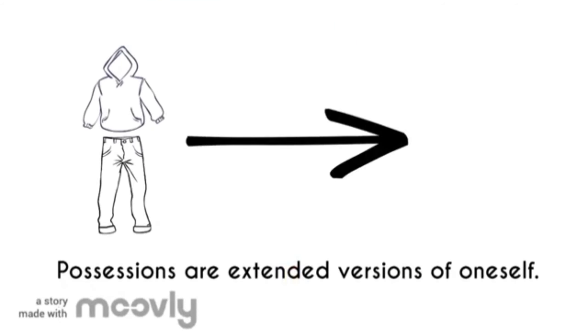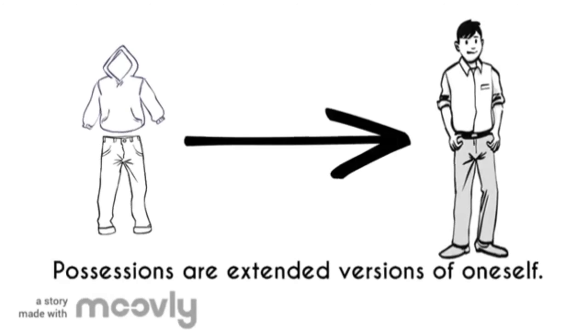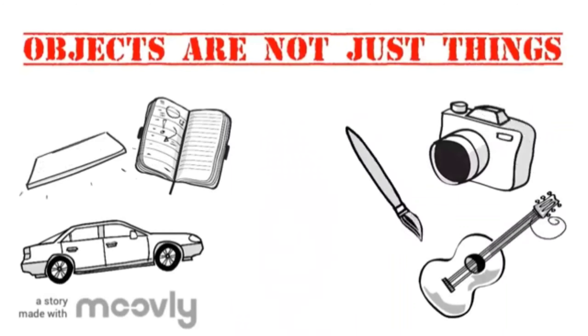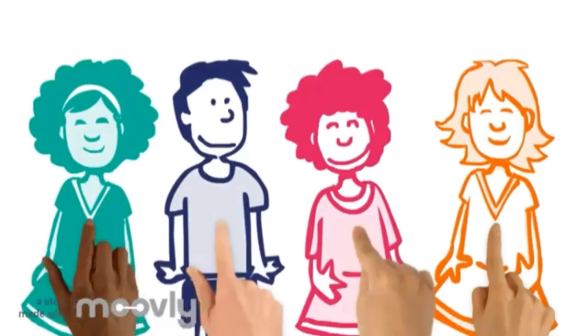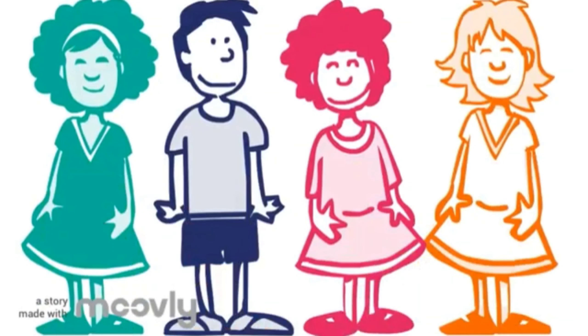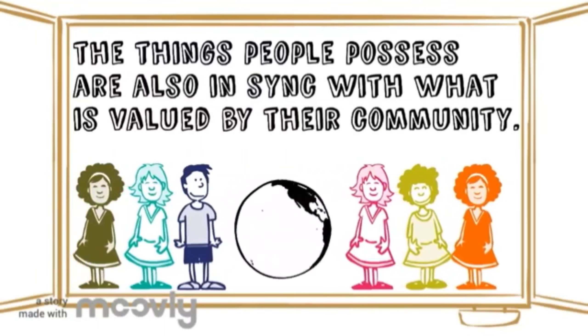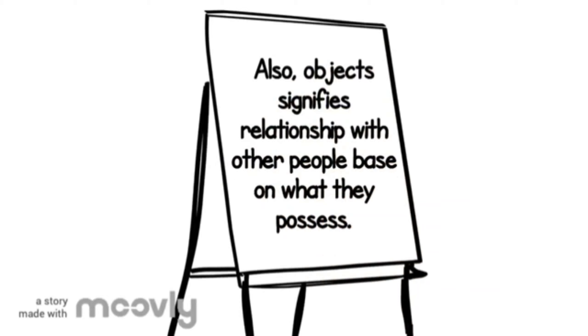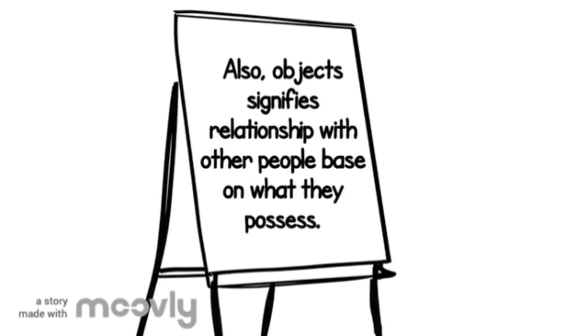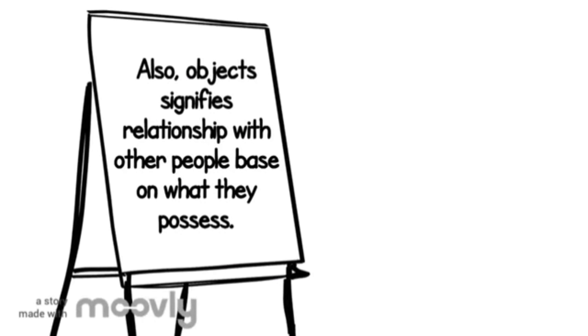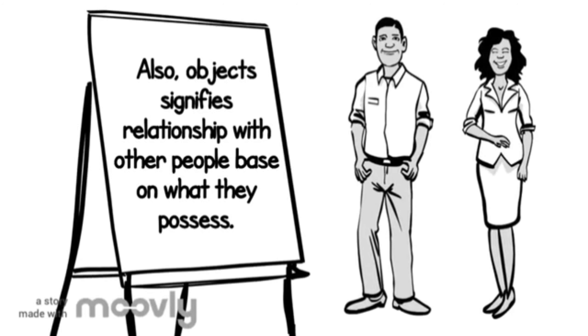Objects are not just things but are reflections of the wider lives of communities and individuals. The things people possess are also in sync with what is valued by their community. This idea suggests that objects, aside from contributing to how one individual identifies himself or herself, also signify relationships of people with others based on what they possess.